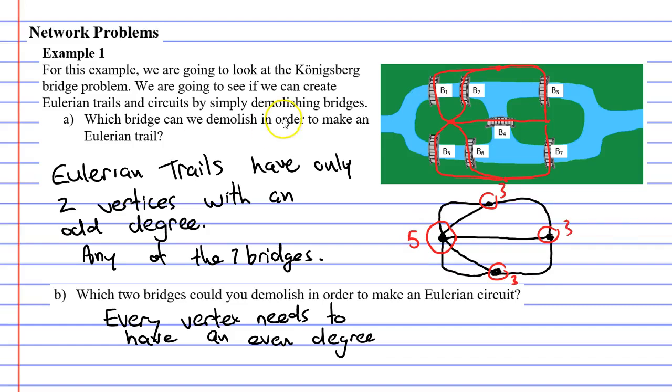Let's try another two bridges. Let's try bridges 1 and 7. What happens when we do that? We're going to get 4, 2, 2, and 2. Excellent. We've made another Eulerian circuit by demolishing two of our bridges.